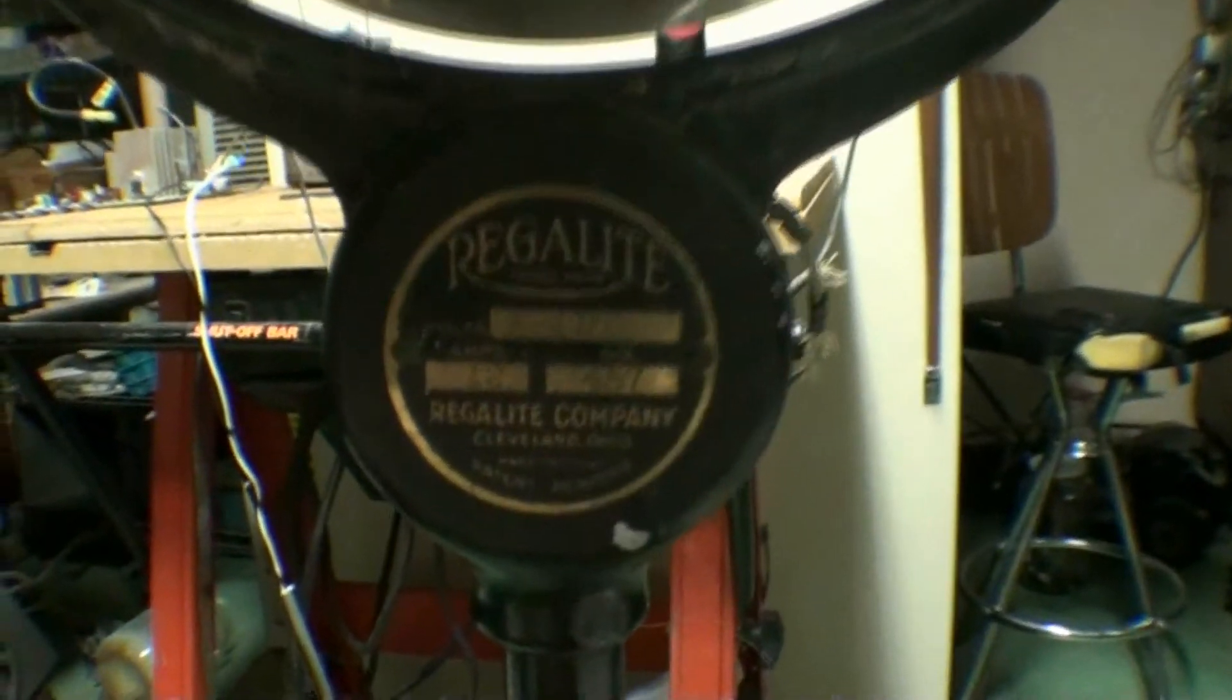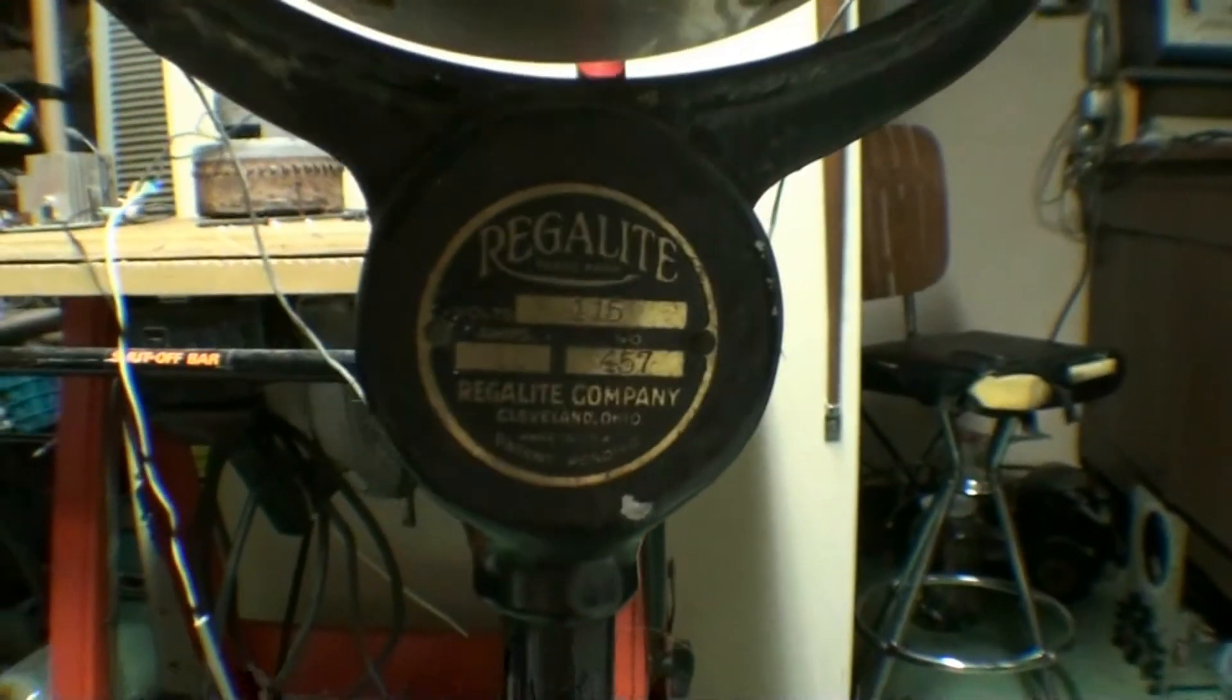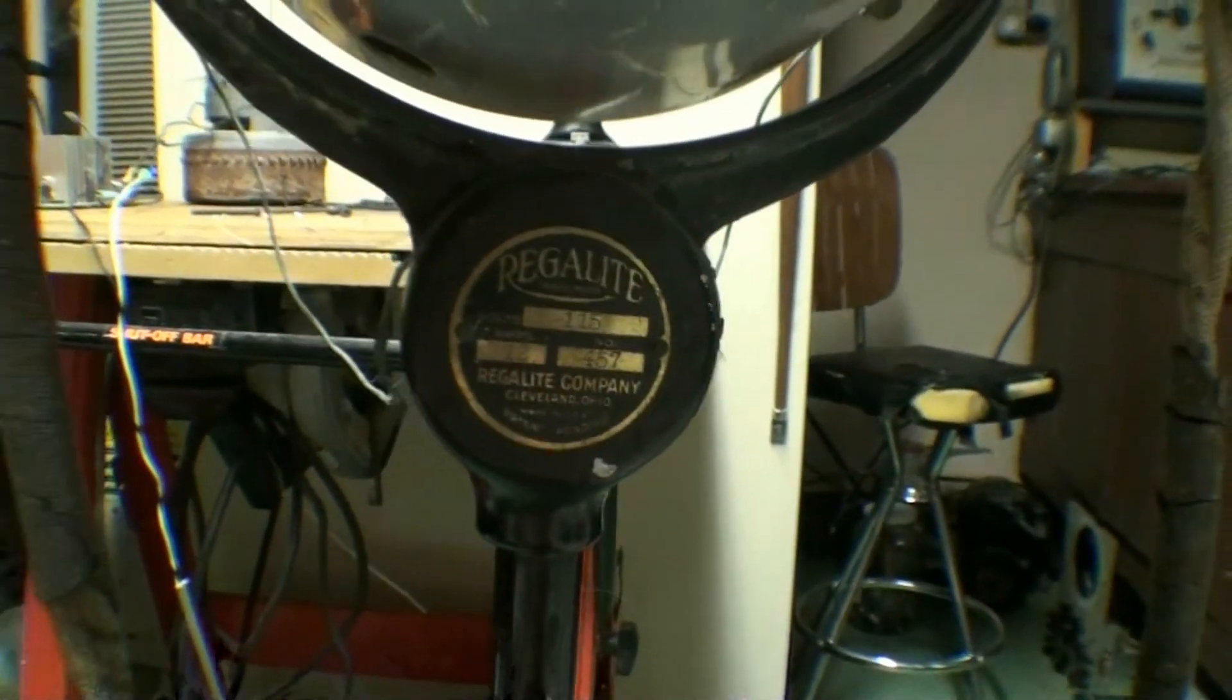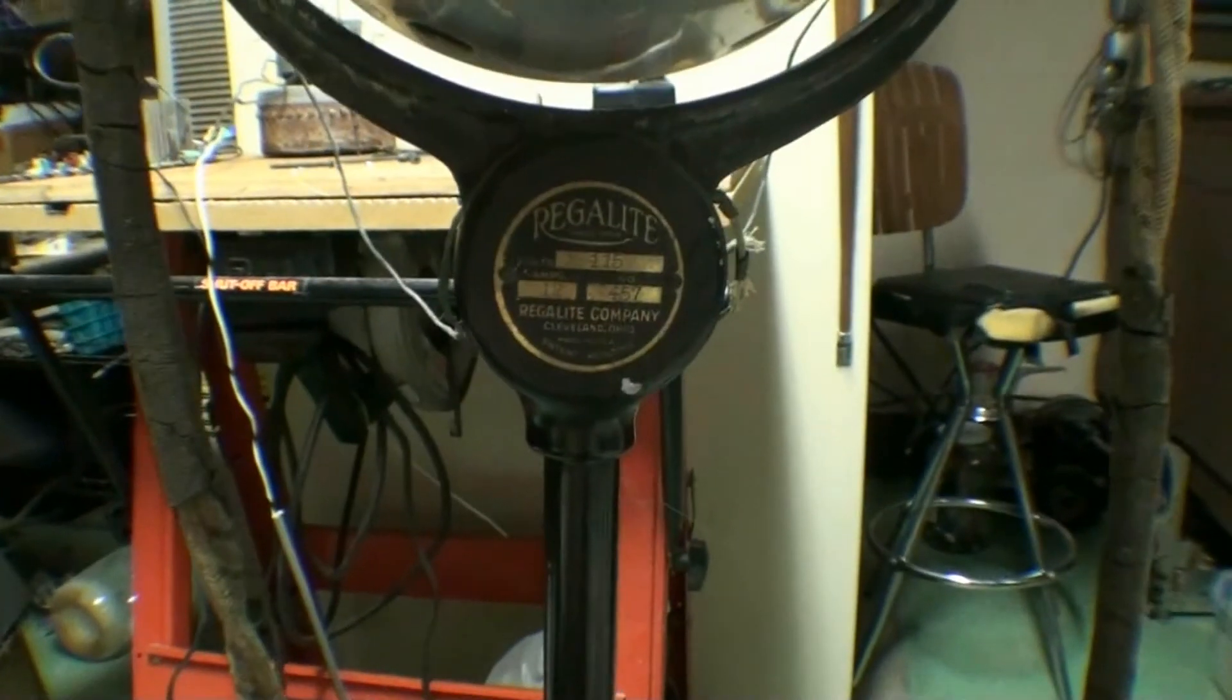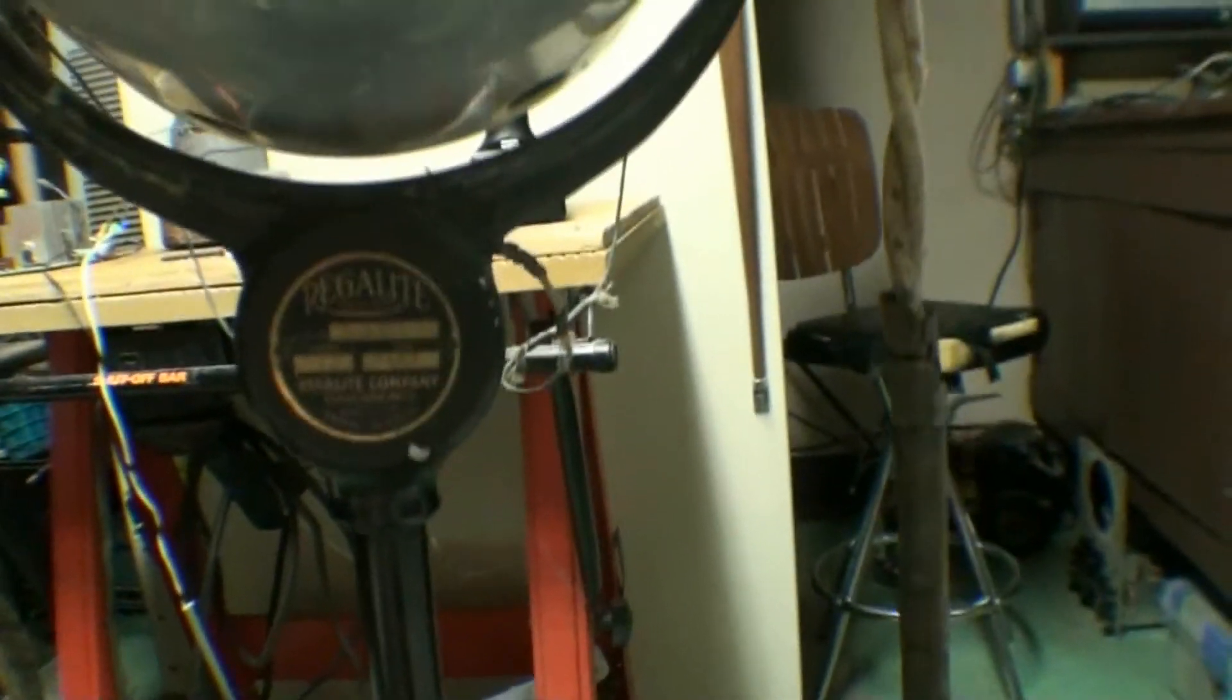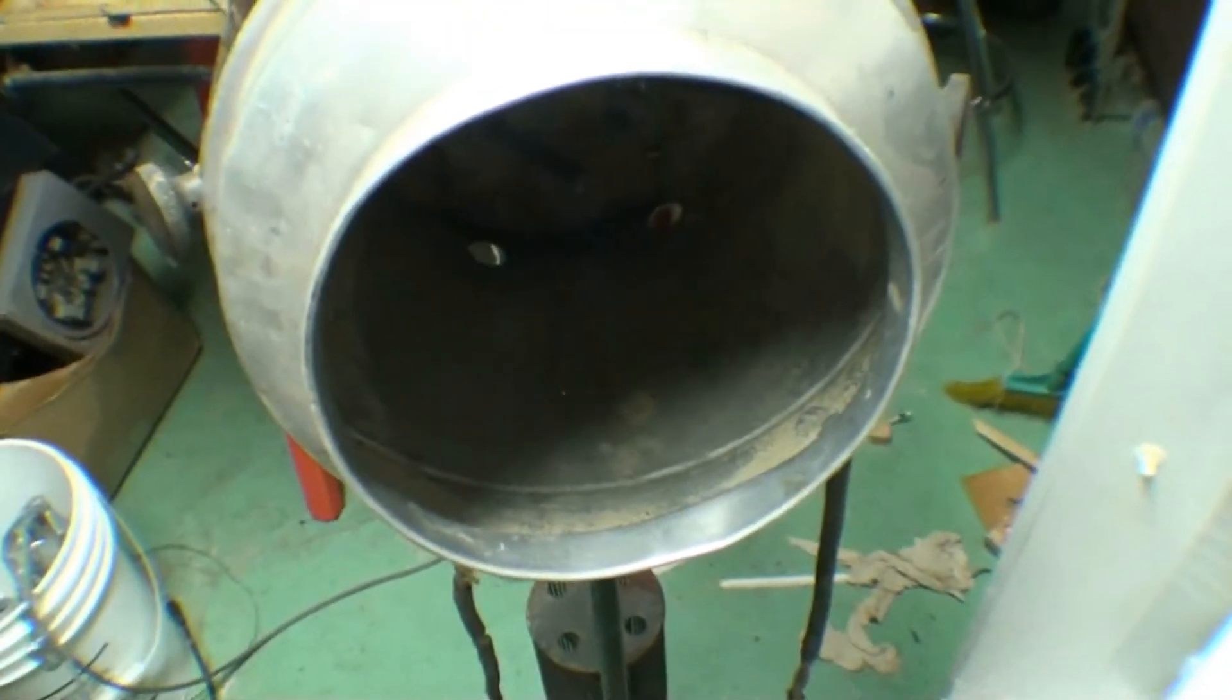So there we have it, a Regal light model 457 from I have no idea what year. It just says patent pending. I can't even look up a patent on it, but if anybody has any information on this lamp, let me know. Thanks for watching.